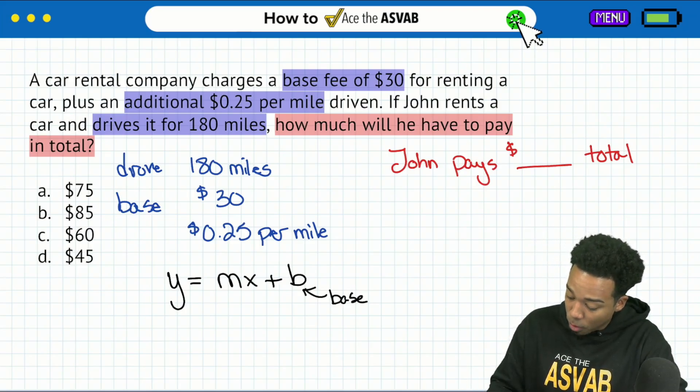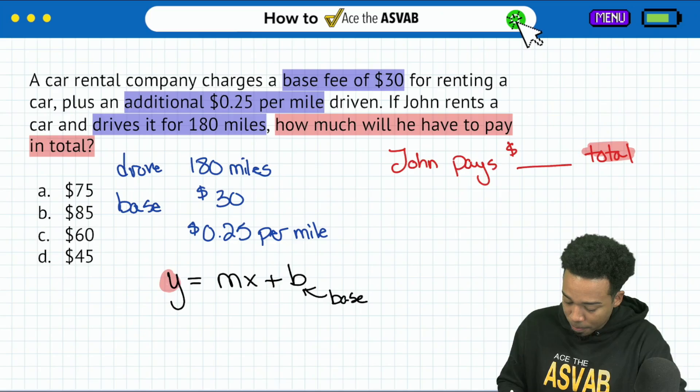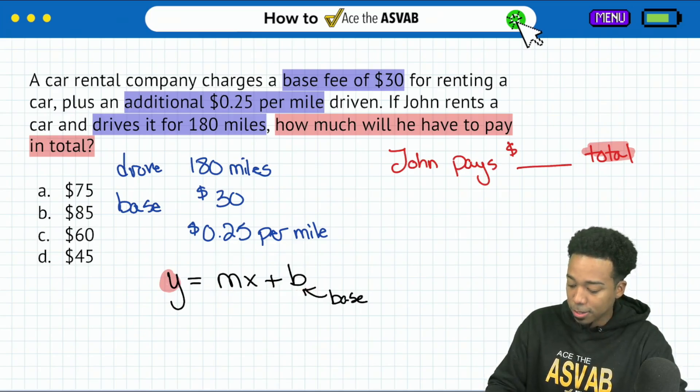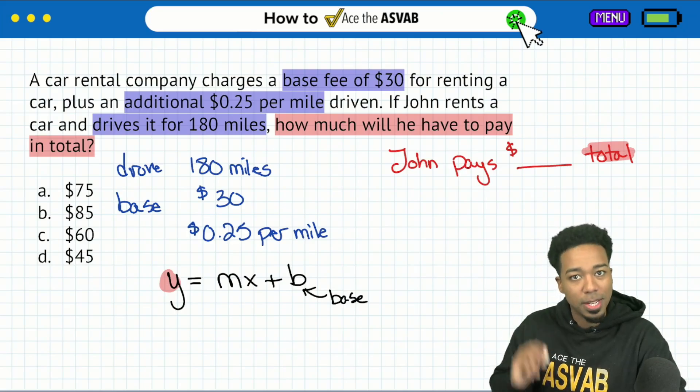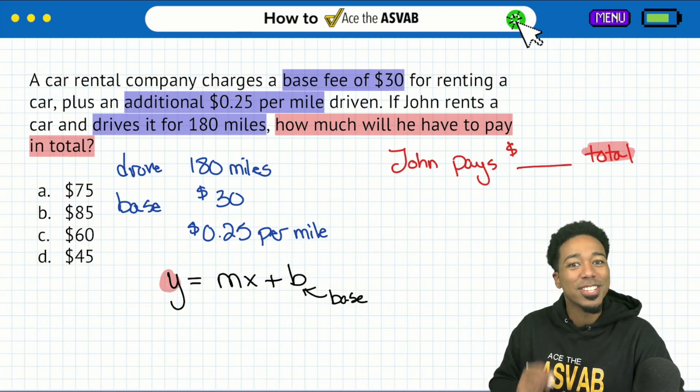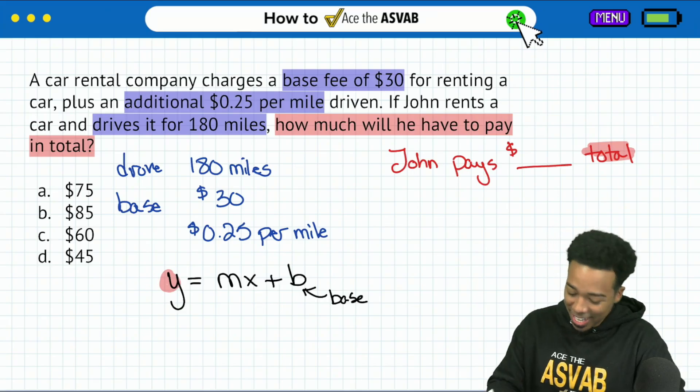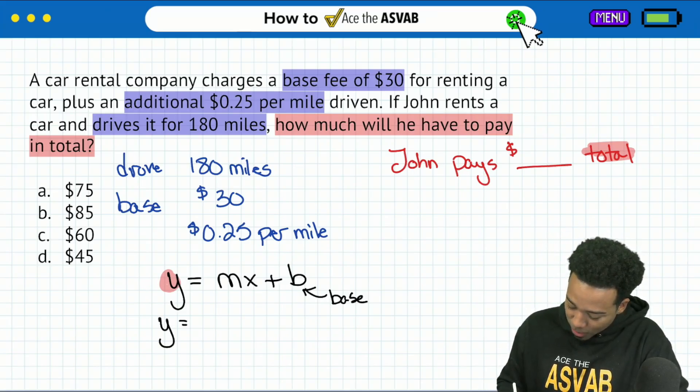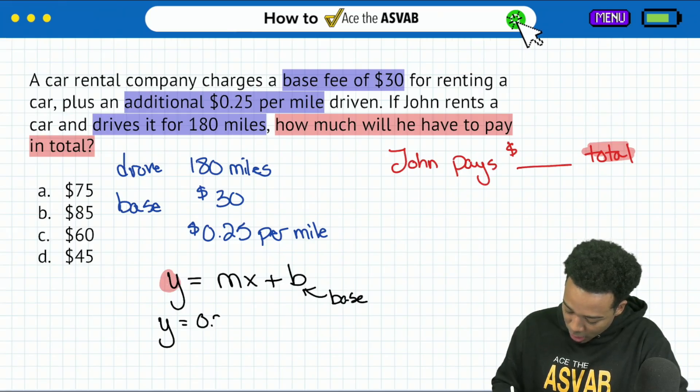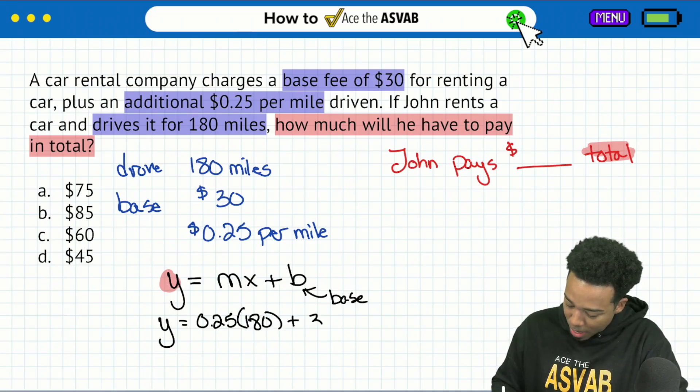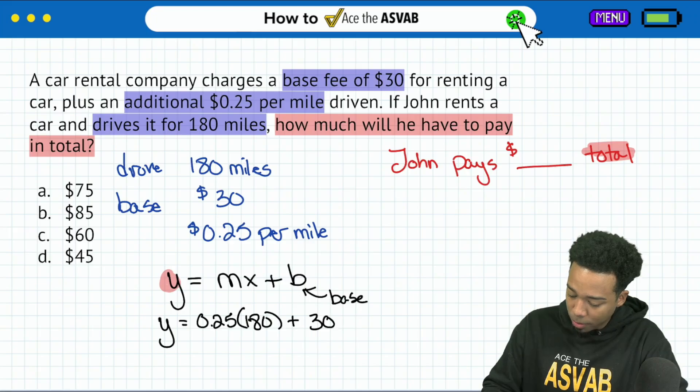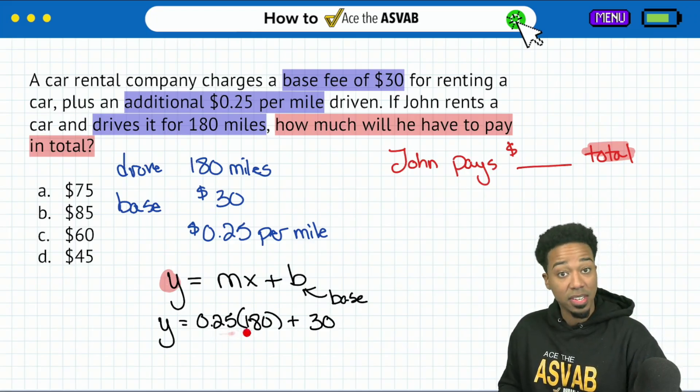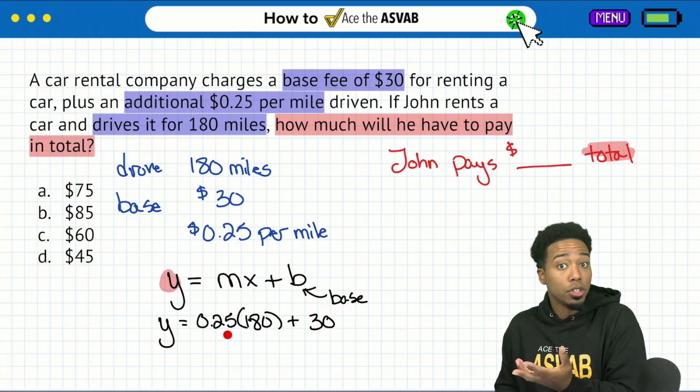Now that I talked about it in English, let me show you what that looks like in math right here. Y equals MX plus B. B is your beginning amount or your base amount in this case. The M, that's your rate, your slope. That's going to be the 25 cents per mile. How many miles did we drive? That's going to be 180 miles. So once we add all this up, we'll get that result.